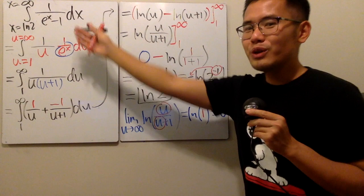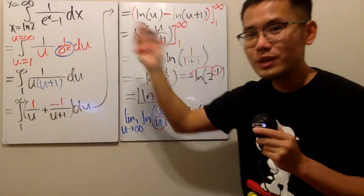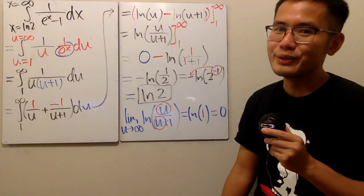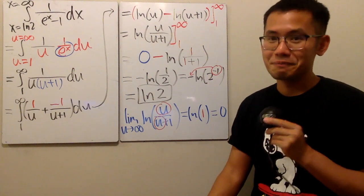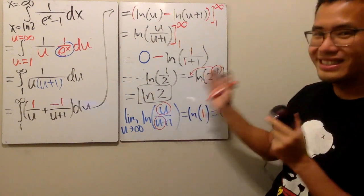So, the one without square root, you end up with ln 2. The one with square root, you end up with pi over 2. Which one do you like more, natural log or the pi? Let me know. Anyway, as always, that's it.